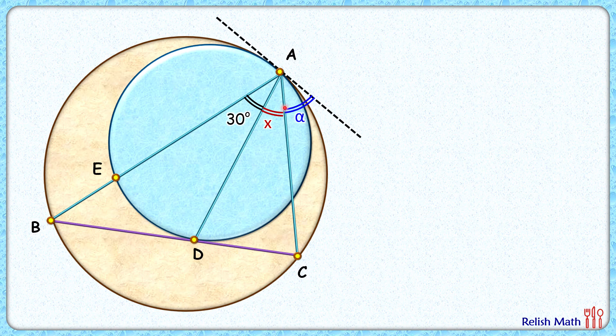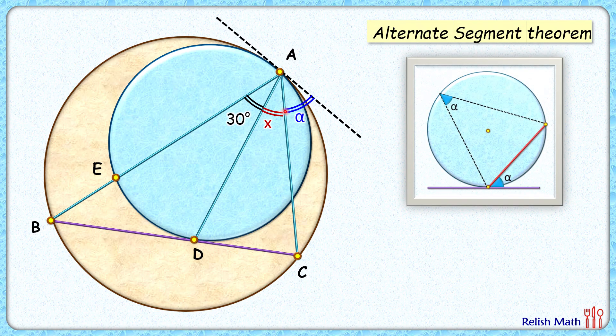Now to proceed further, we'll be using the alternate segment theorem. It states that in a circle, the angle between the tangent and the chord at point of tangency, that is this angle alpha which is made in this minor segment, will be equal to any angle subtended by this chord in the alternate segment.